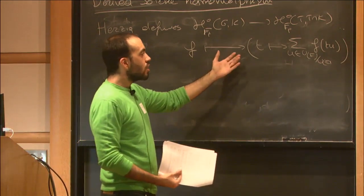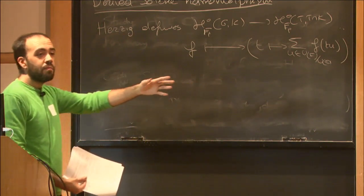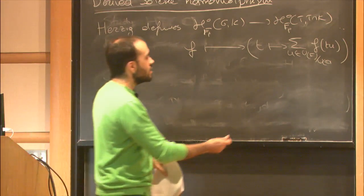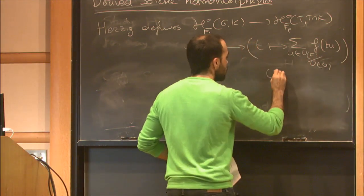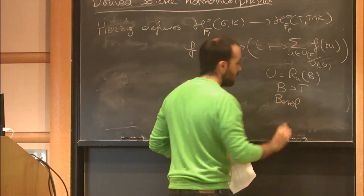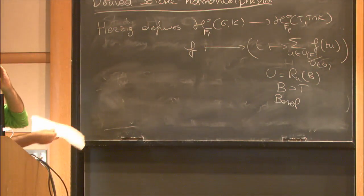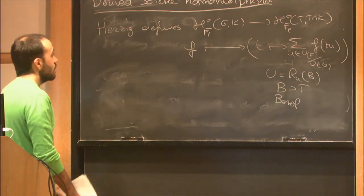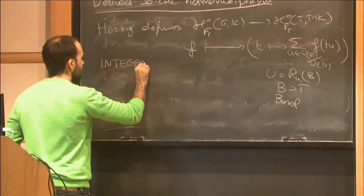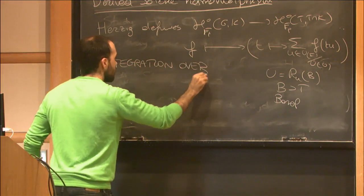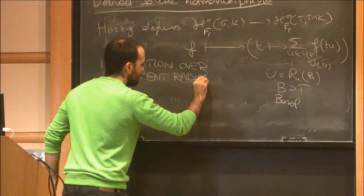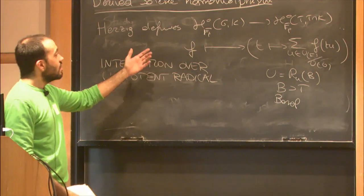F is compactly supported, so only finitely many terms of this sum are non-zero. If you're familiar with the classical Satake homomorphism, you'll notice that we are missing the modulus character of the Borel. But we are forced to do that because this modulus character is going to be a power of p, and we really don't have powers of p with these types of coefficients. U is the unipotent radical of a Borel containing T, so the slogan for this is: integration over the unipotent radical.